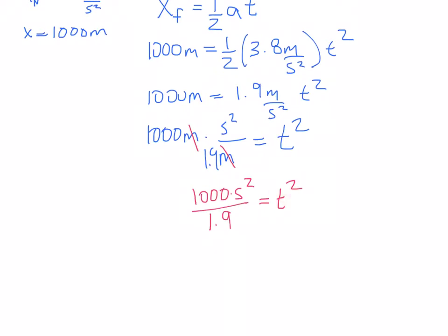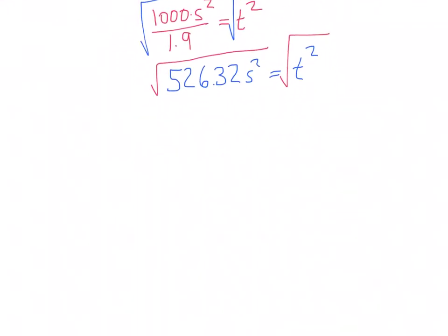This is good because I got t squared and I got seconds squared. So what am I going to do? I'm going to take the square root of both sides. I'm also going to do this calculation in here. And we're going to take the square root of both sides. And that gives us a time of 22.94 seconds is equal to time. So remember this is for the Formula One car.